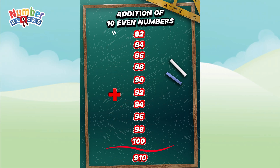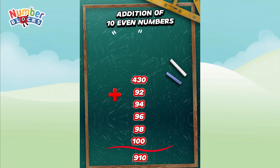And lastly, let's try to add: 82 plus 84 is equal to 166. 166 plus 86 is equal to 252. 252 plus 88 is equal to 340. 340 plus 90 is equal to 430. 430 plus 92 is equal to 522. 522 plus 94 is equal to 616. 616 plus 96 is equal to 712. 712 plus 98 is equal to 810. 810 plus 100 is equal to 910.